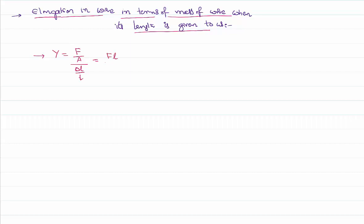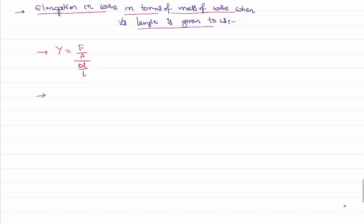So I can rearrange it as F/A divided by δL/L, which is F times L by A times δL. Let me check this expression again. Yeah, I can rearrange the terms as Young's modulus equal to F into L by area into δL.